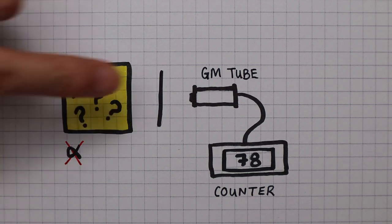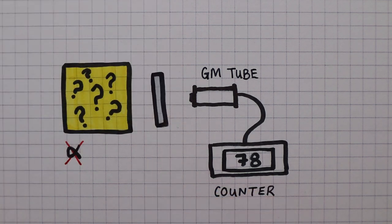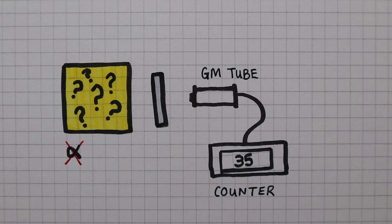Now we are going to switch the absorber out for a piece of aluminum. This time the count rate reduces to 35 counts. So we know that the source must be emitting some beta radiation because some of it has been absorbed by the piece of aluminum.